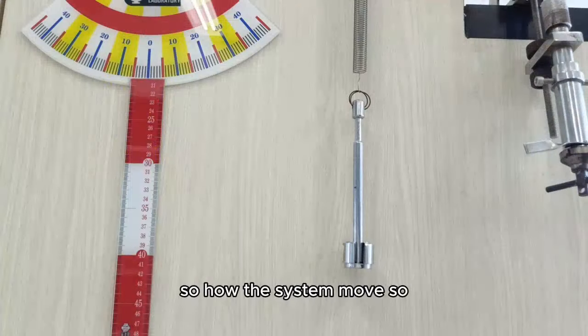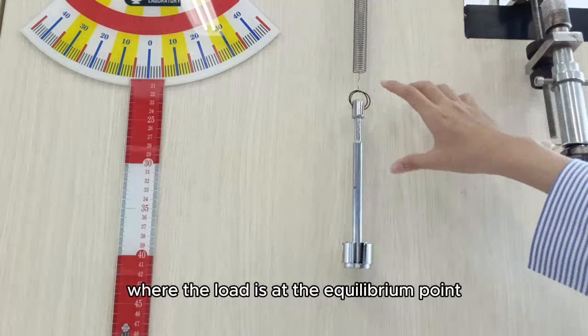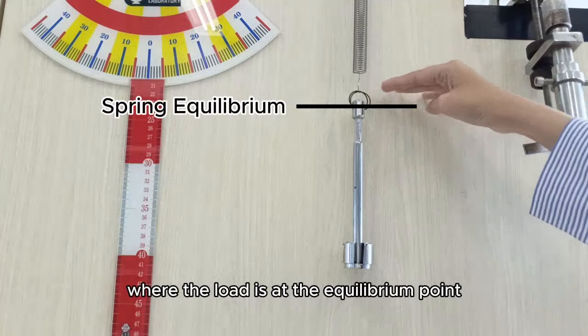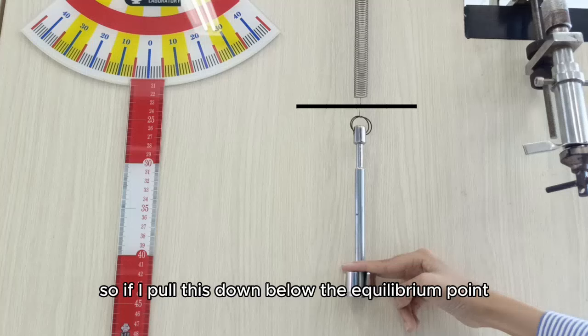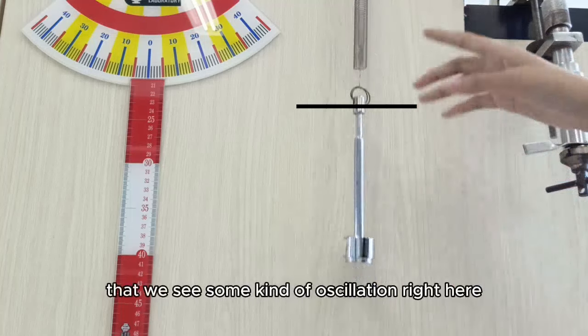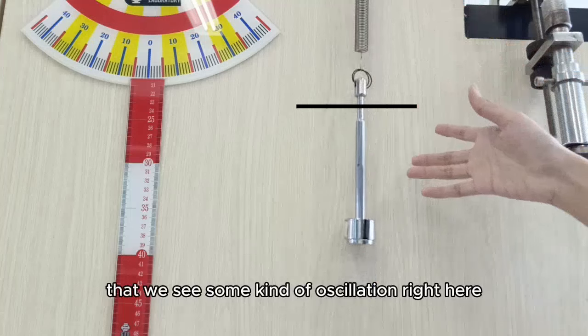Okay, so how does the system move? So this is the system where the load is at the equilibrium point. So if I pull this down to load the equilibrium point, it will move up and down. We see some kind of oscillation right here.